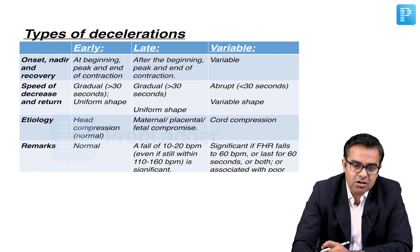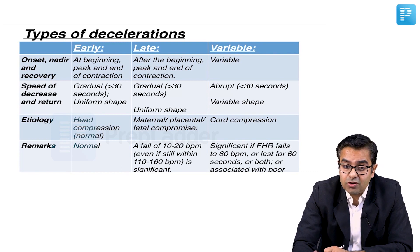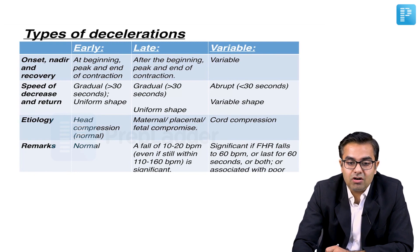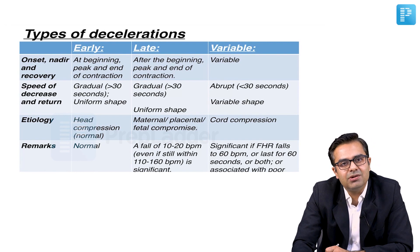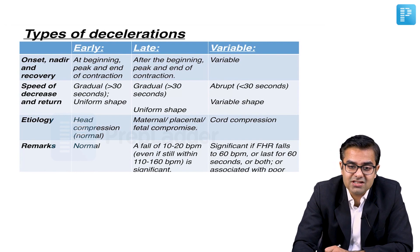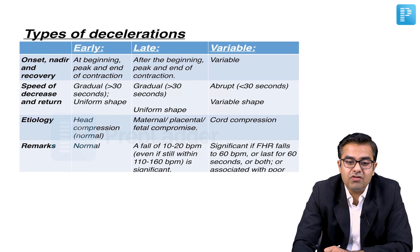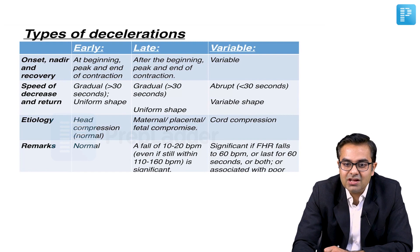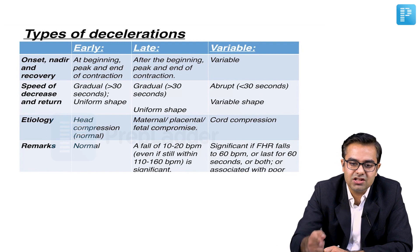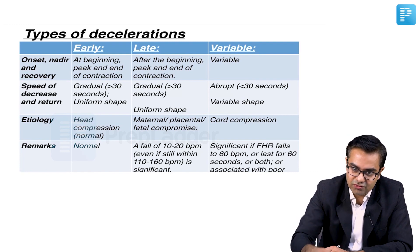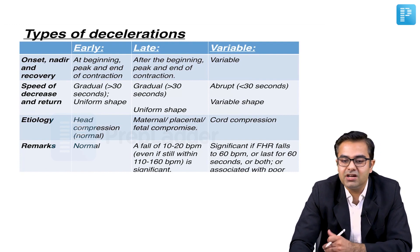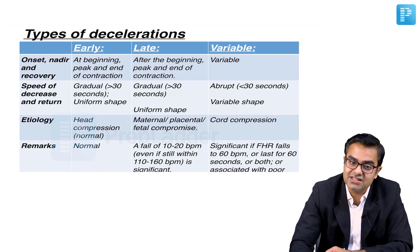Variable deceleration is due to cord compression. From an MCQ point of view, the speed of decrease and return of fetal heart rate: in early decelerations it is gradual, in late decelerations it is also gradual, and in variable it is very abrupt. Gradual means it takes more than 30 seconds and the shape is uniform, while abrupt means it is variable in shape and can happen in less than 30 seconds.